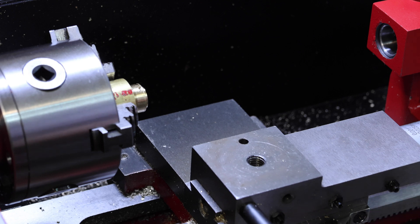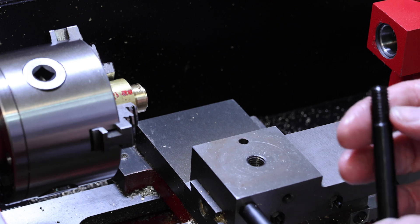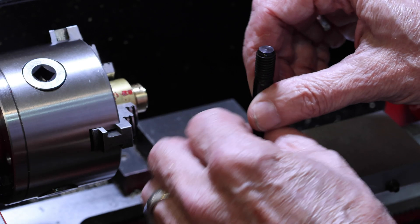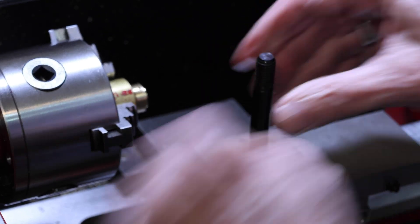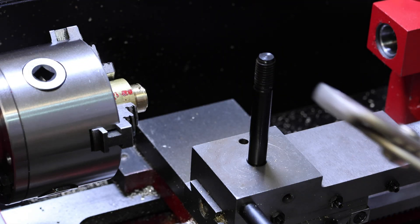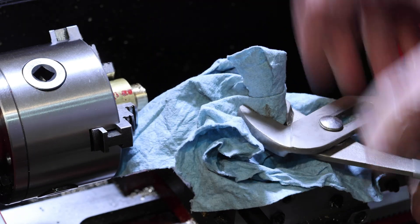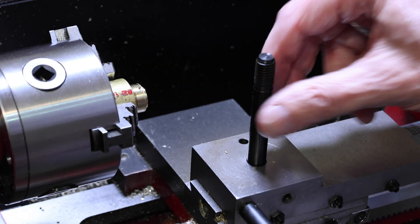Okay, so now we need to put this new post in. So just threads in like so. Now we need to tighten it. It doesn't have the Allen head on the top so we'll just do it this way. Put the paper towel around it so we don't damage it. And just twist it in.